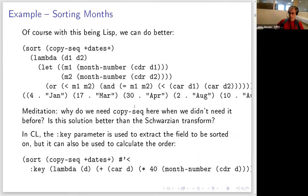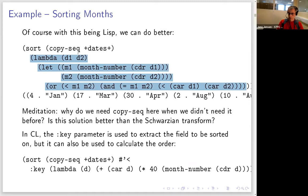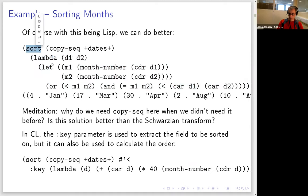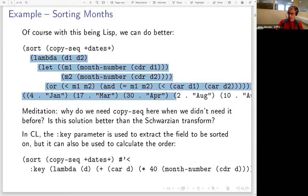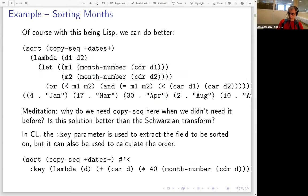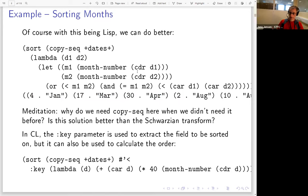In Lisp we can do much better — we don't have to pre-compute and strip the month numbers. I can pass the whole comparison logic directly into the sort call: calculate the month numbers inline, compare them, and if equal compare the dates. That's much easier and more concise.